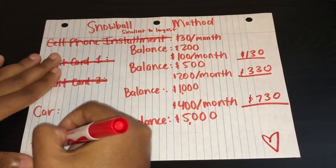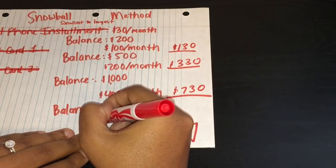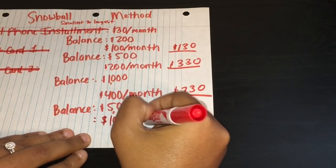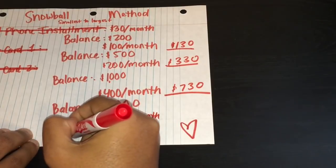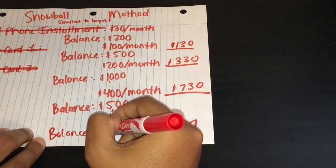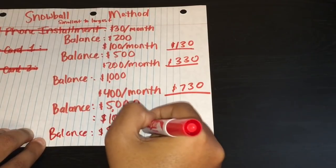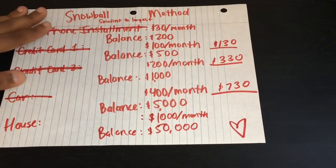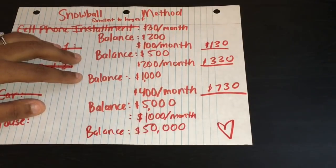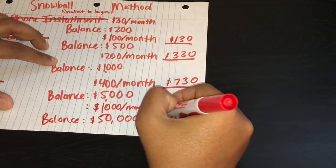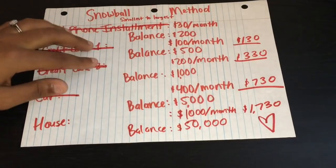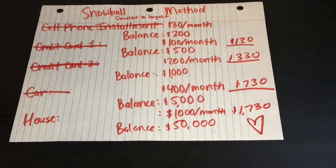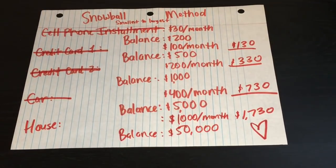Again, if you had a house and your mortgage minimum payment was, let's say, $1,000 a month and your balance was, I don't know, $50,000 — what this means is once you knock out the car, you can then add that $730 to the $1,000. And at this rate, you are putting $1,730 towards your mortgage every single month minimally. Of course, that's not quite double the payment, but almost. Again, what are you willing to sacrifice to get your house paid off quicker?